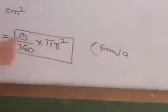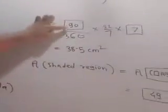Then area of sector AXC equal to theta upon 360 into pi R square. This is the formula for area of sector. Value of theta is 90 upon 360 into 22 by 7 into 7. So 7 cancels.